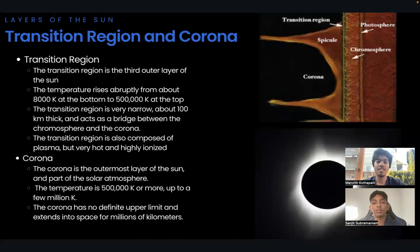The temperature is about 500,000 Kelvin or more, up to a few million Kelvin and the density is extremely low, about 10 to the negative 12 grams per centimeter cubed or even less. The corona has no definite upper limit and extends into space for millions of kilometers.